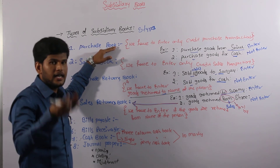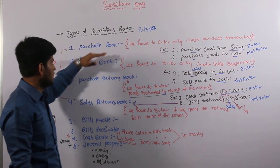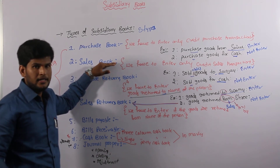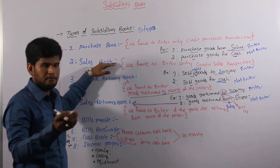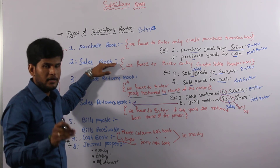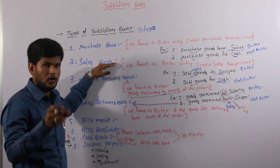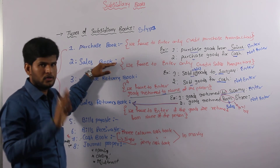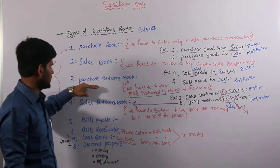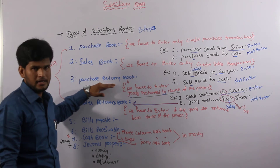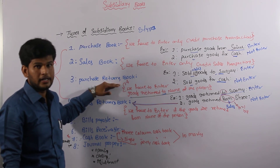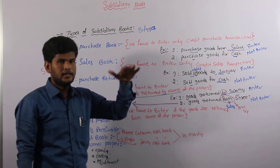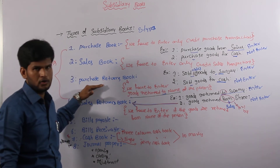No need to enter cash-based purchase transactions into the purchase book. Next one is sales book — in sales book also we have to enter sales transactions based on credit. If the transaction includes a cash word, then we don't want to enter those transactions into our sales book. Come to purchase return book — purchase return means if the goods are returned. We have to clearly identify two words, then enter the transaction into purchase return.